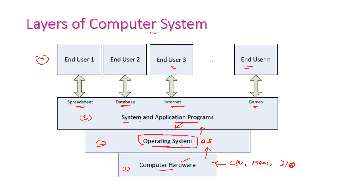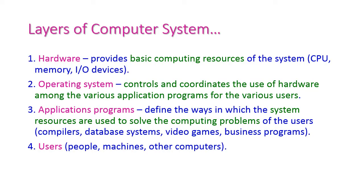In the layers of the computer system we have four layers. The first is the hardware layer, which provides the basic computing resources of the system — CPU, memory, I/O devices, and other physical devices. The second is the operating system layer, which is used to control and coordinate the use of hardware among various application programs for various users. The operating system plays an important role in the computer system.